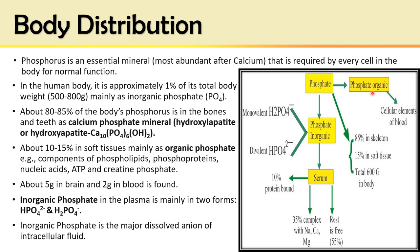Phosphate in the living system can be organic or inorganic. About 85% is present in the skeleton as hydroxyapatite crystals and 15% in soft tissues. The cellular elements of blood — RBCs and WBCs — are rich in organic phosphates, while the circulating phosphate in serum is inorganic phosphate. Serum inorganic phosphate: 10% is bound to protein, 35% is complexed with sodium, calcium, and magnesium, while the remaining 55% is free in ionized form.